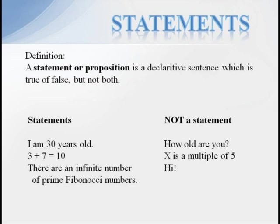However, everyone agrees it must be either true or false. Some examples which are not valid statements in our symbolic logic system would be how old are you and hi, which are not declarations since they're not a statement. And the truth value of X is a multiple of five is unknown since we don't know the value of X. So it's not a statement either.